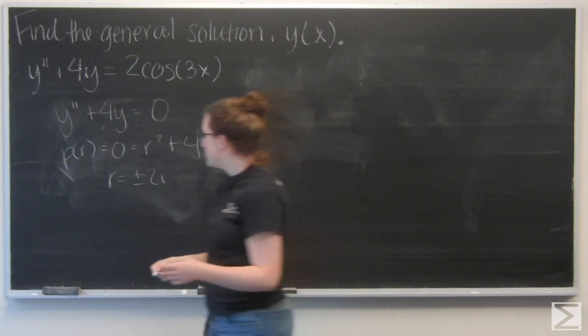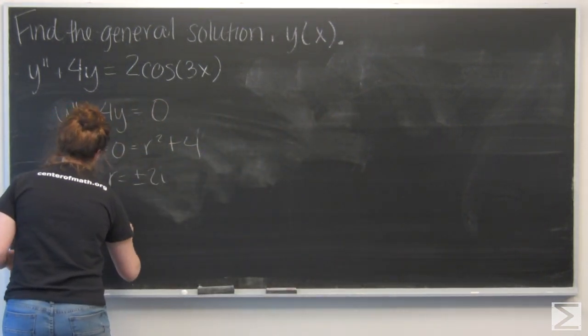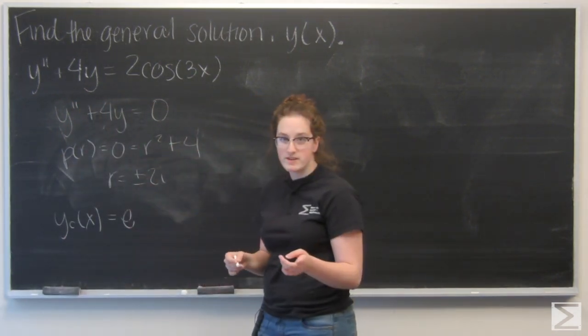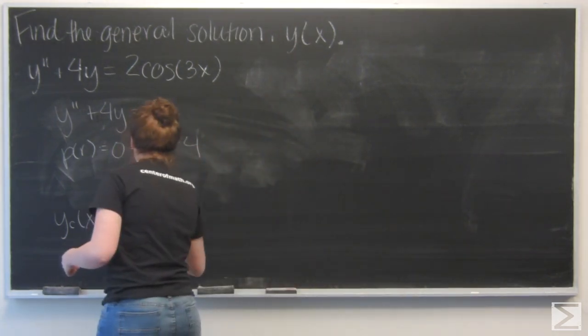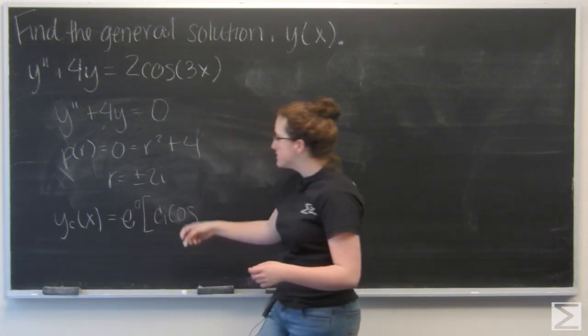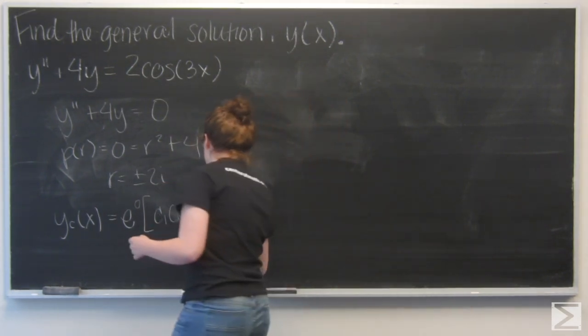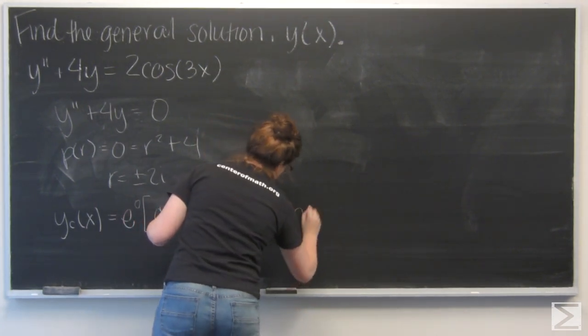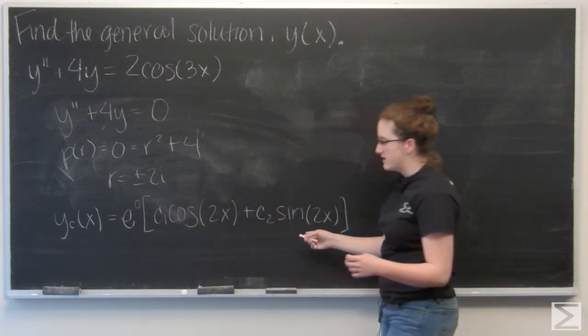So now I can write out yc. And that is going to be e to the real portion of this solution, which is 0, times x, times c1 cosine of the imaginary coefficient, so 2x, plus c2 sine of 2x.